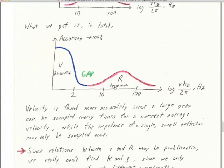We're trying to combine the velocity view with the impedance view — V and R. We put these two spectra together and suddenly realize: we have a gap. These actually don't cross. There is no frequency where we have decent dynamic information and good velocity information. And I always shiver when this happens.